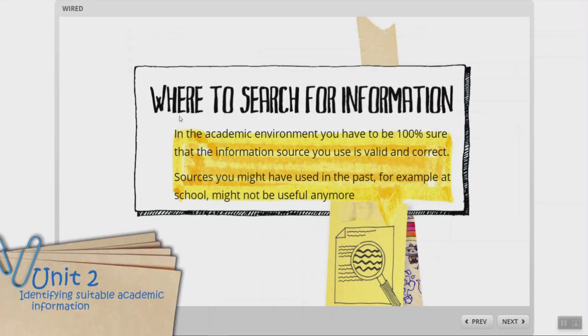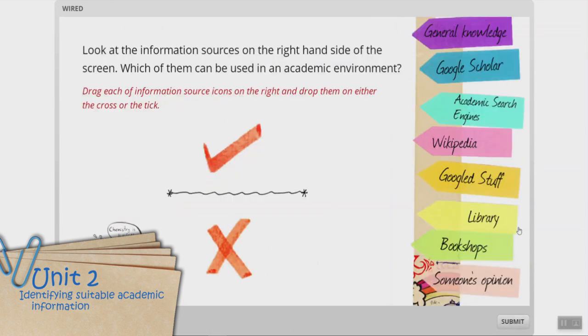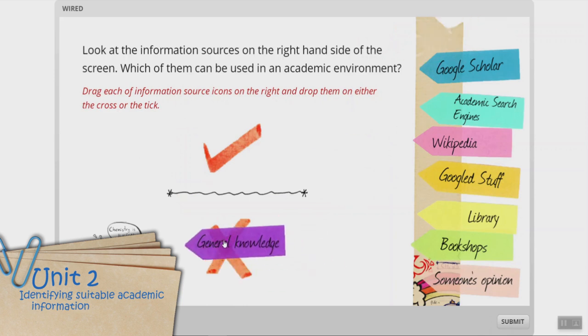In Unit 2, the focus is on finding and identifying suitable academic information. WIRED shows explicitly that Googling is not as effective as searching within academic databases.